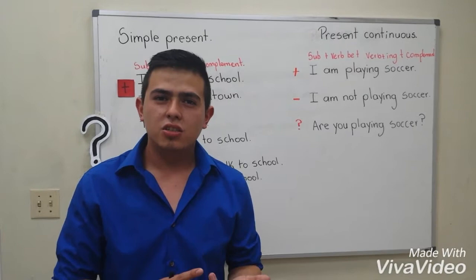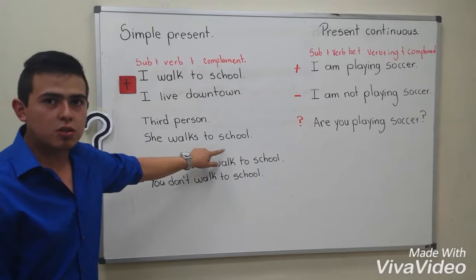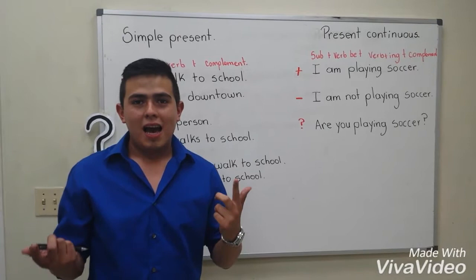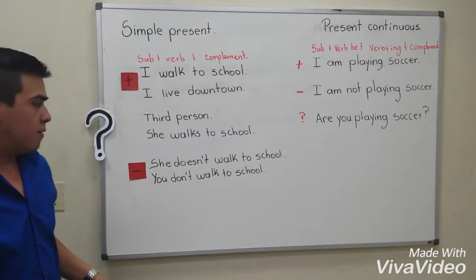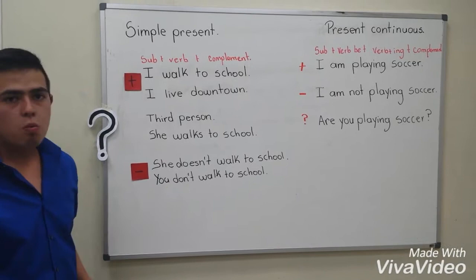We have a sentence here: she walks to school — we use the S. If you want to make a negative sentence, we use the auxiliary don't or doesn't. For example, she doesn't walk to school. Or here, you don't walk to school.